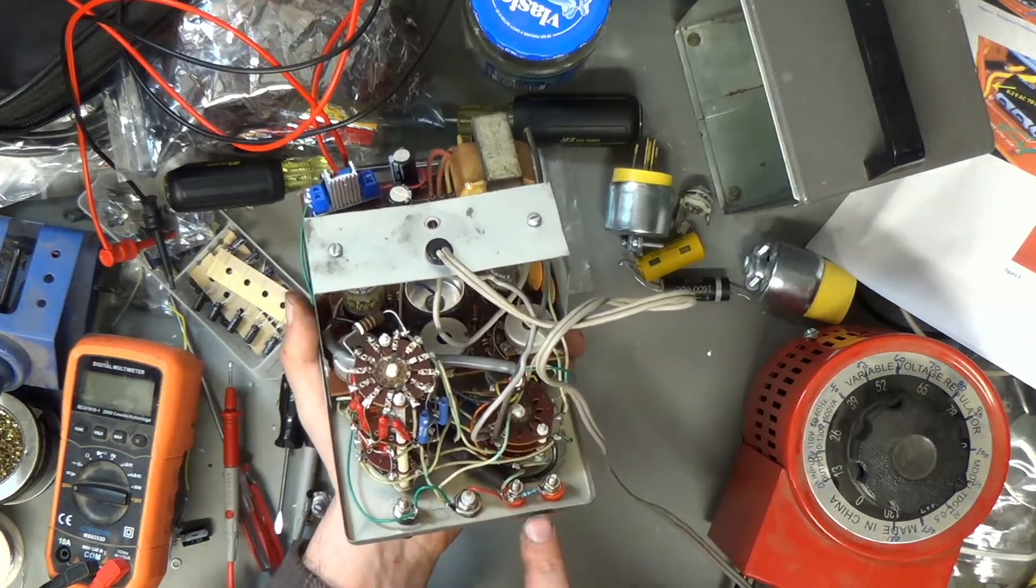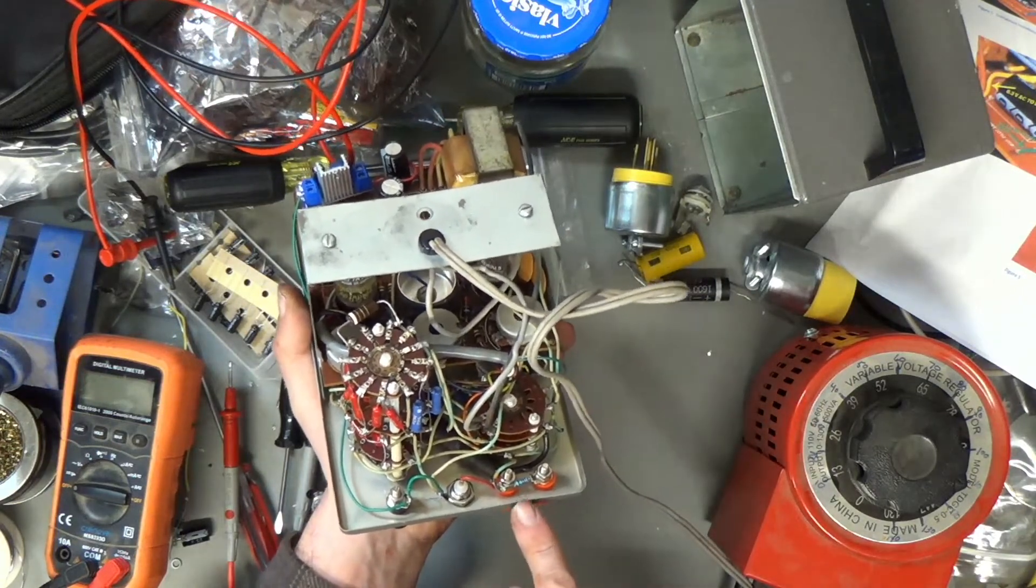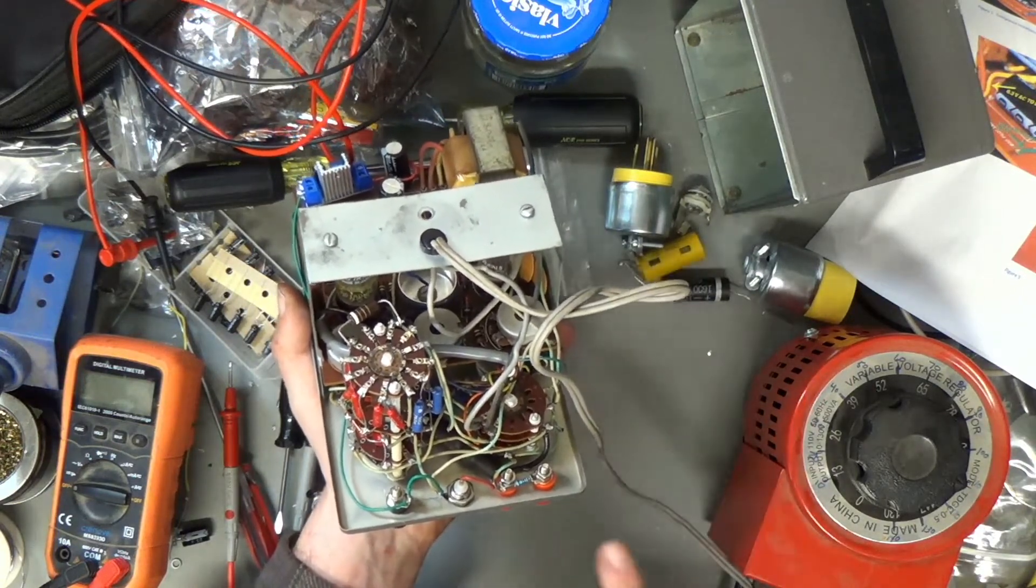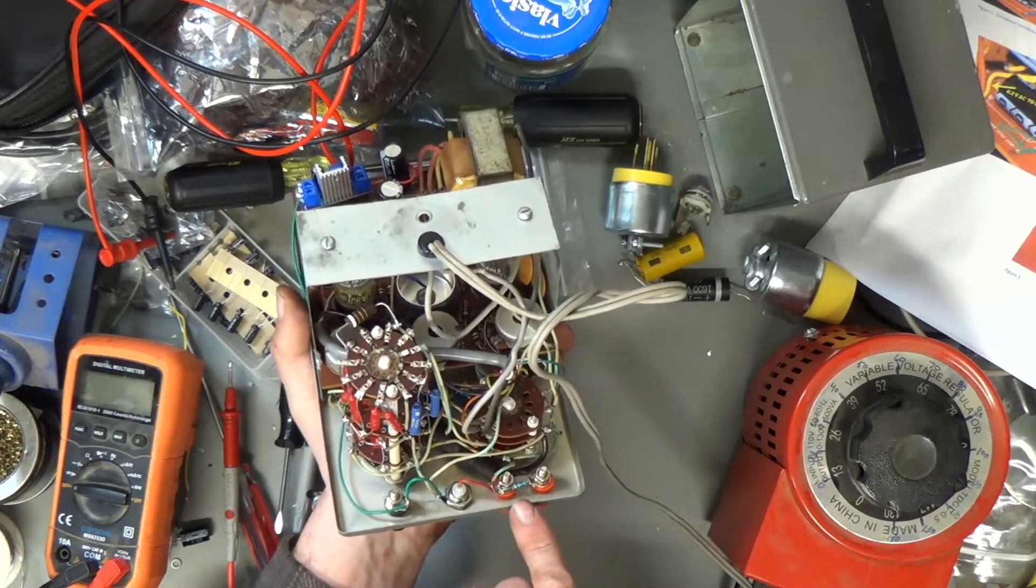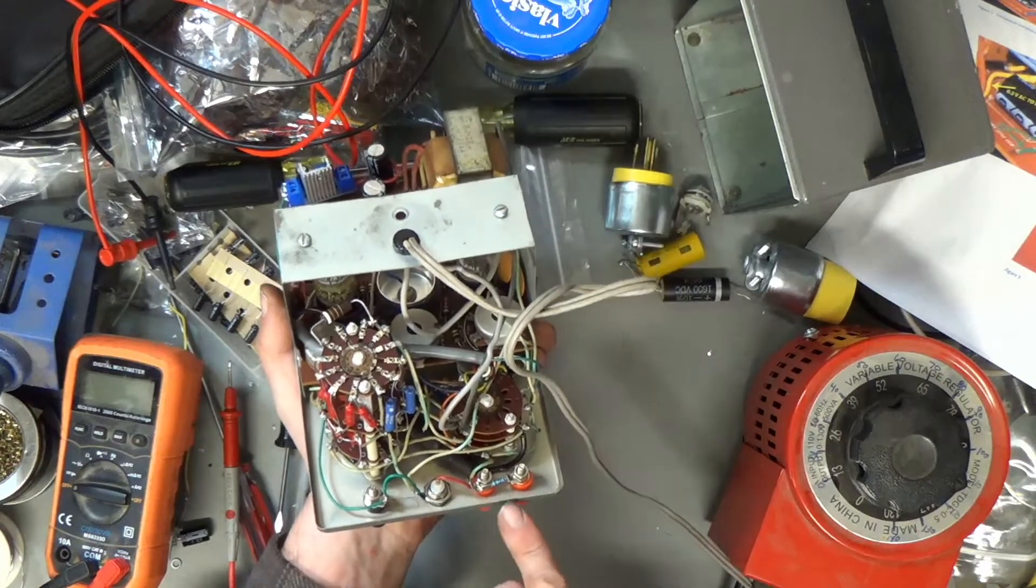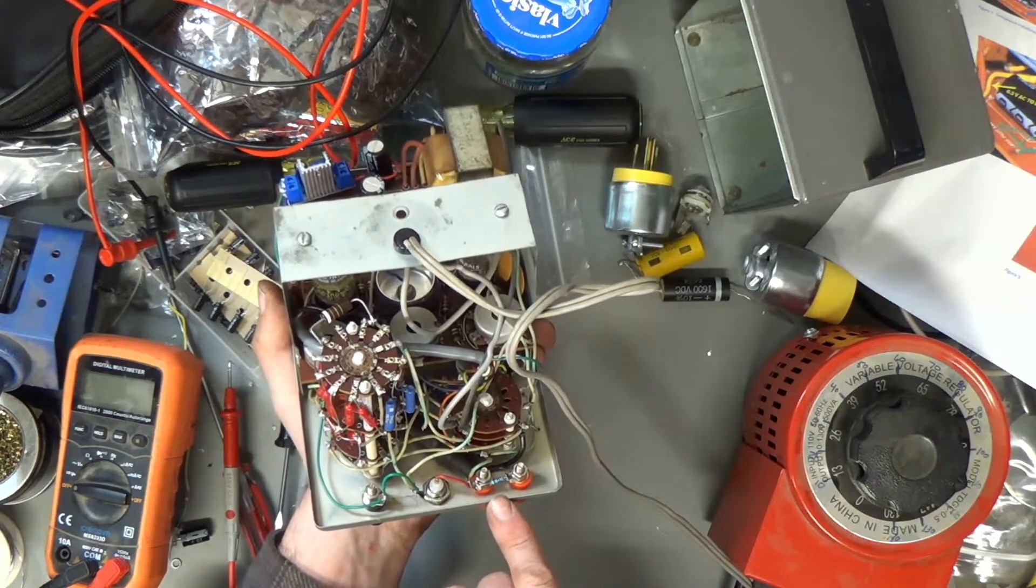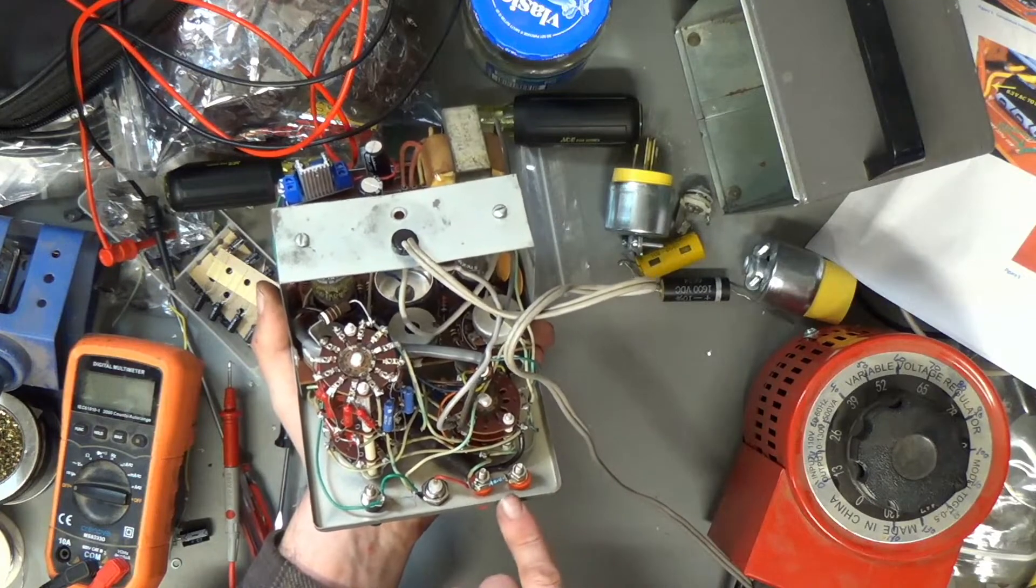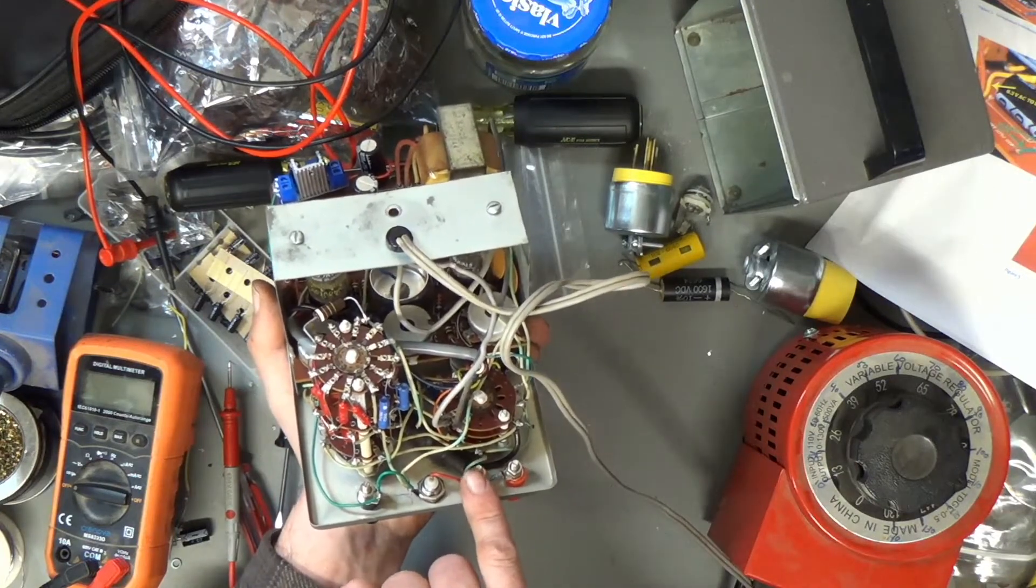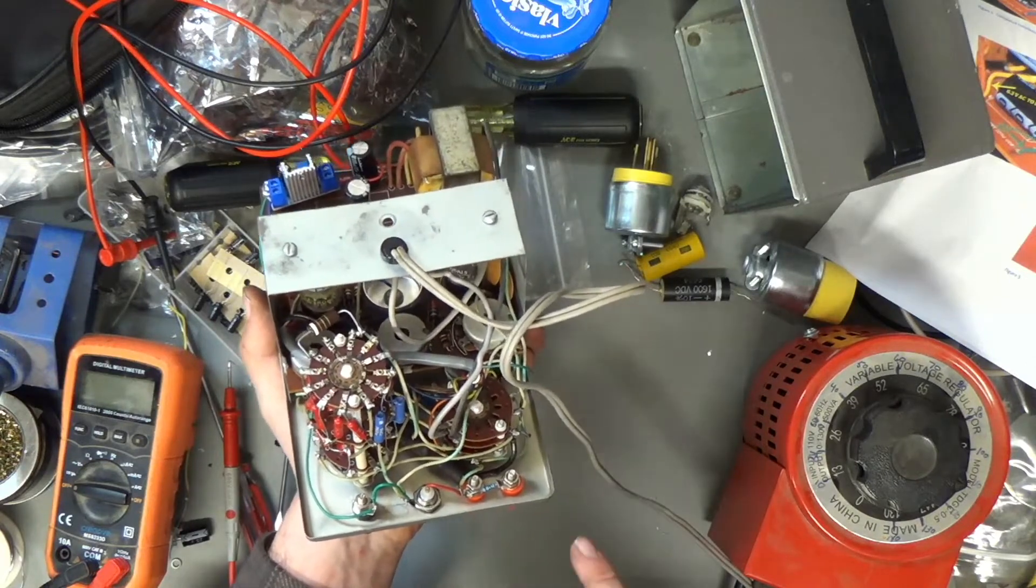Instead of having to use the special Heath kit probe. I assume the reason they put that big resistor in the Heath kit probe was for probing high voltage. But if we need to measure super high voltages, we can just go back to this port and use the Heath kit probe.